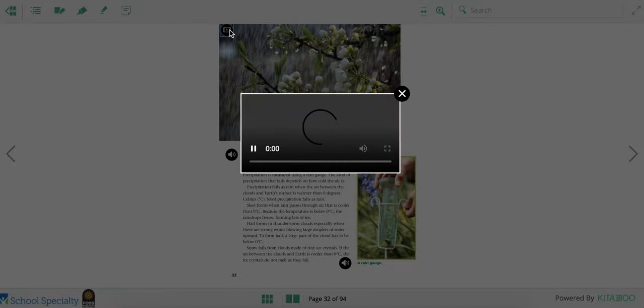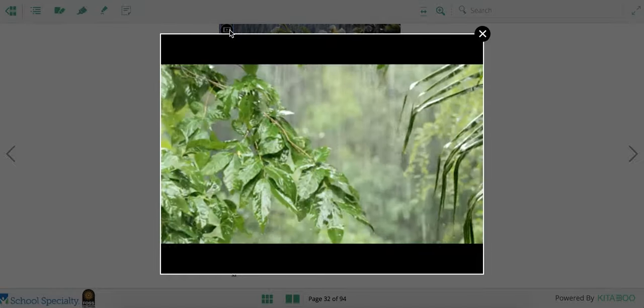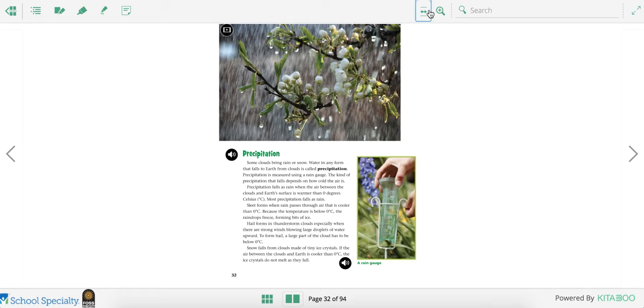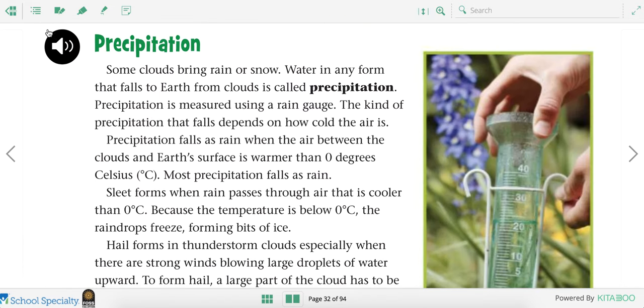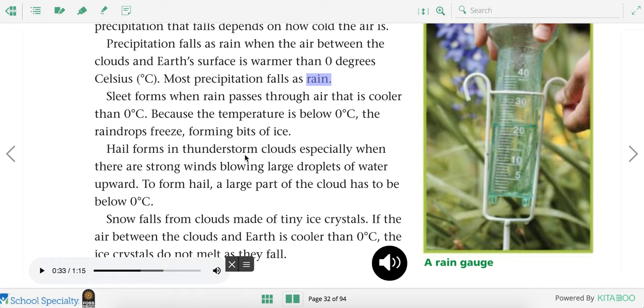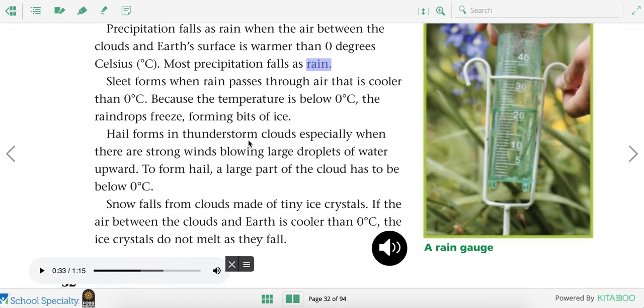Meteorologists also learn about precipitation. That's the amount of liquid that's falling in the sky. Precipitation. We definitely see precipitation like rain in Oakland. Some clouds bring rain or snow. Water in any form that falls to earth from clouds is called precipitation. Precipitation is measured using a rain gauge. The kind of precipitation that falls depends on how cold the air is. Precipitation falls as rain when the air between the clouds and earth's surface is warmer than zero degrees Celsius. Most precipitation falls as rain. So they use a rain gauge like this to find out how much rain has fallen.